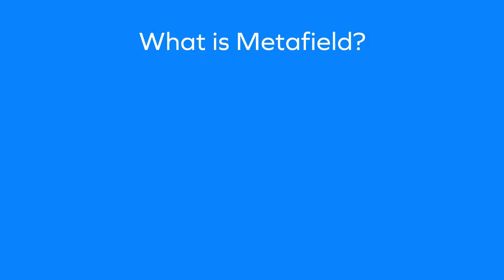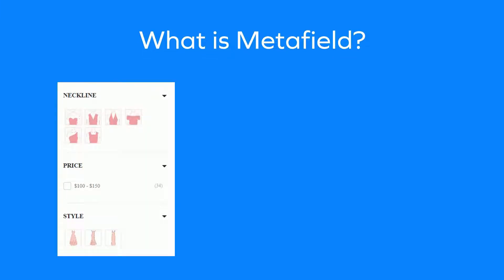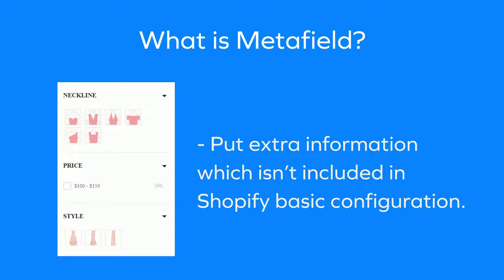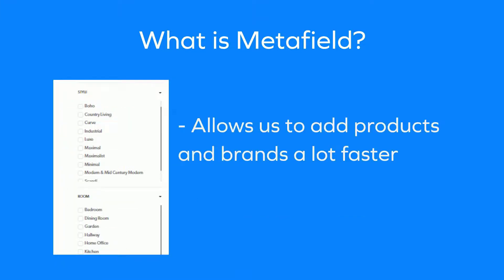Meta fields are about adding additional information to your admin or storefront that doesn't come standard across the Shopify platform. For example, if you want to specify where a product's origins are or which model it fits, these things will require you to use meta fields. Meta fields allow you to add products and brands faster with the same consistency and quality.